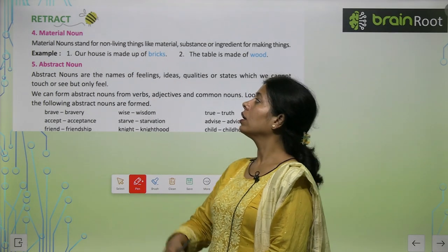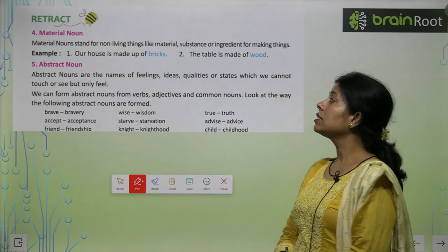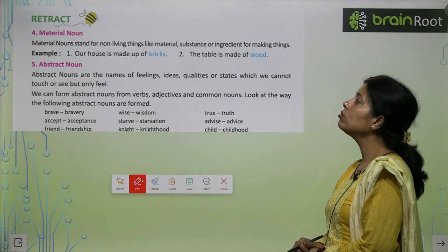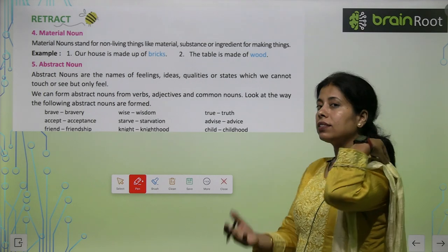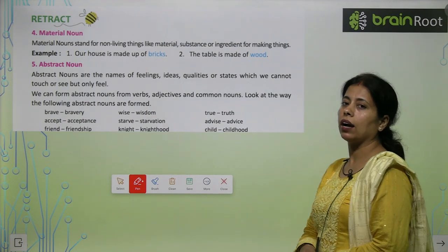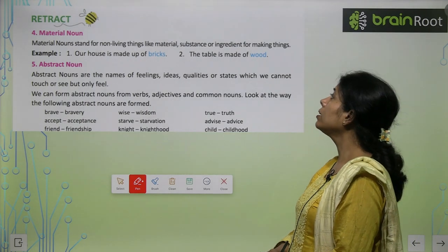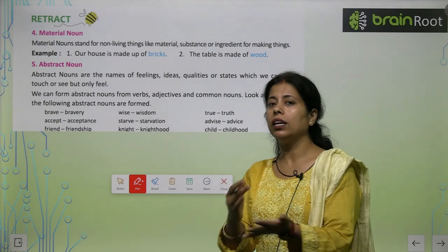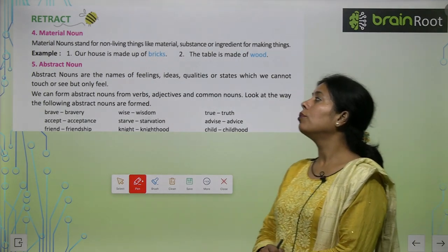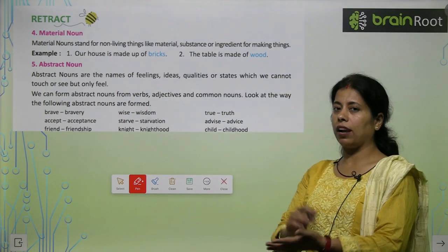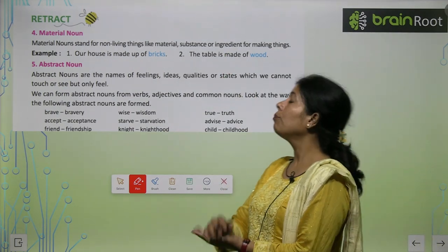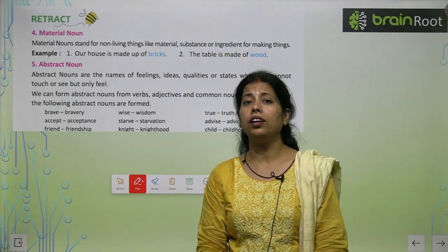Material Noun: Material nouns stand for non-living things or substances — like bricks, wood. किसी भी substance के बारे में जो non-living thing है — table, chair — या किसी भी thing को बनाने के लिए जो ingredient use होता है, उसको material noun बोलते हैं।